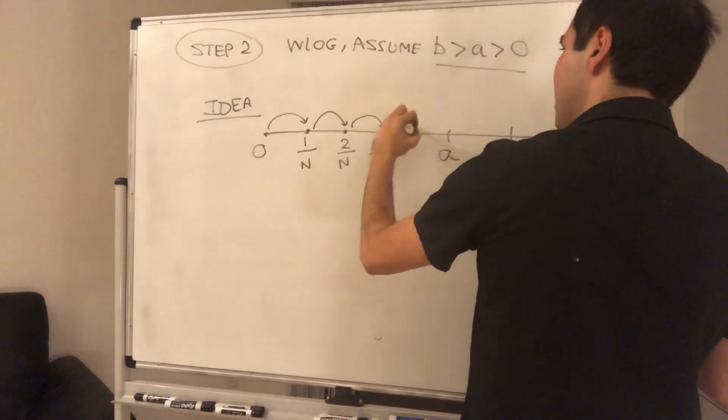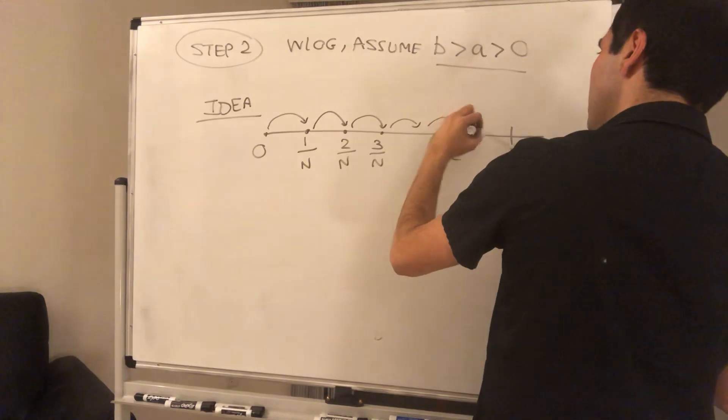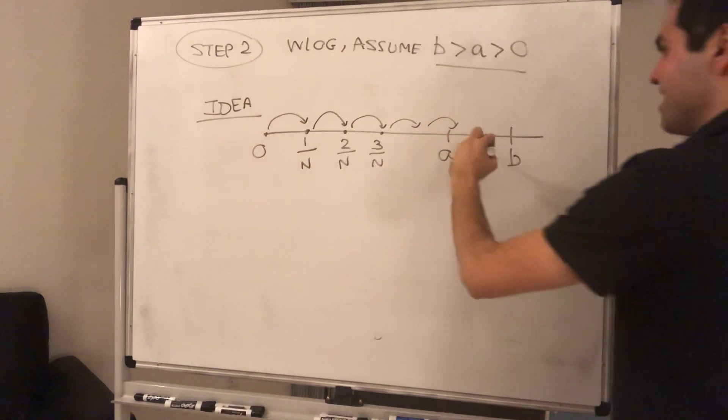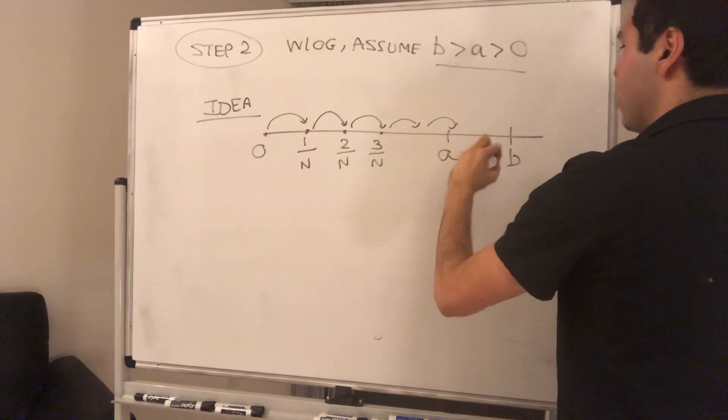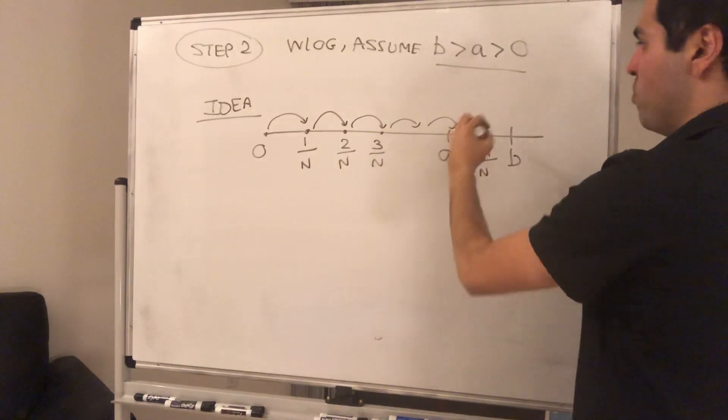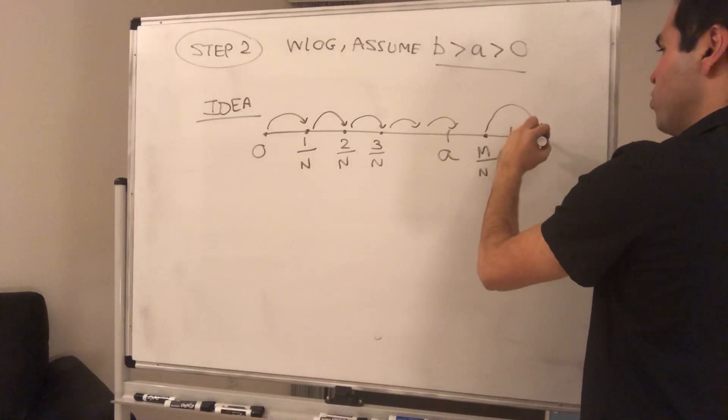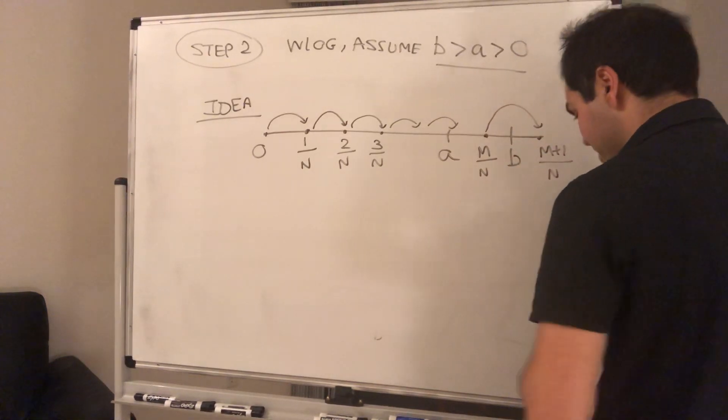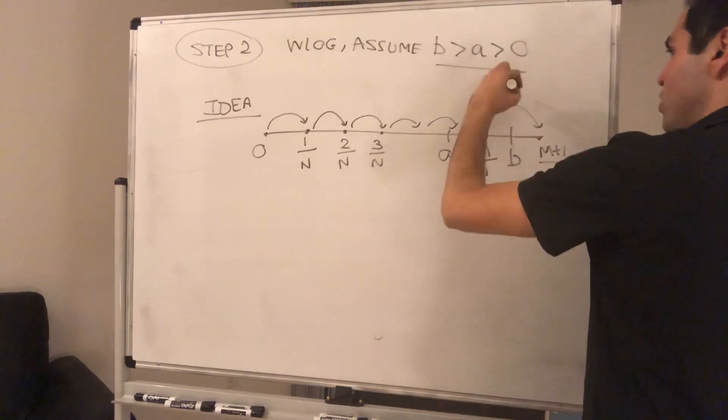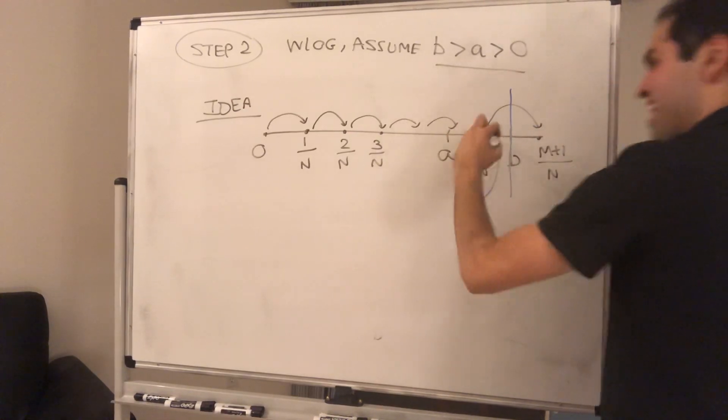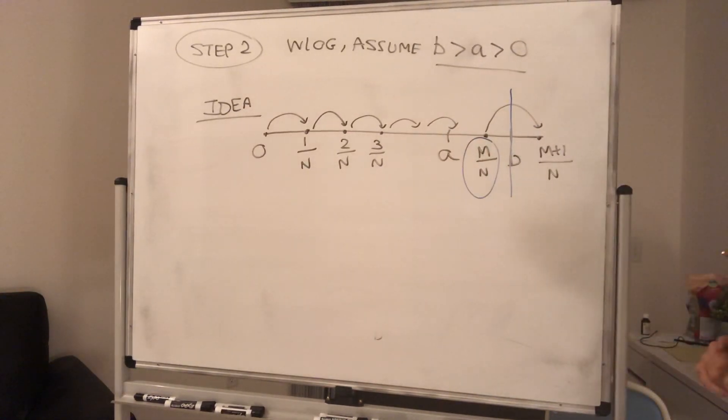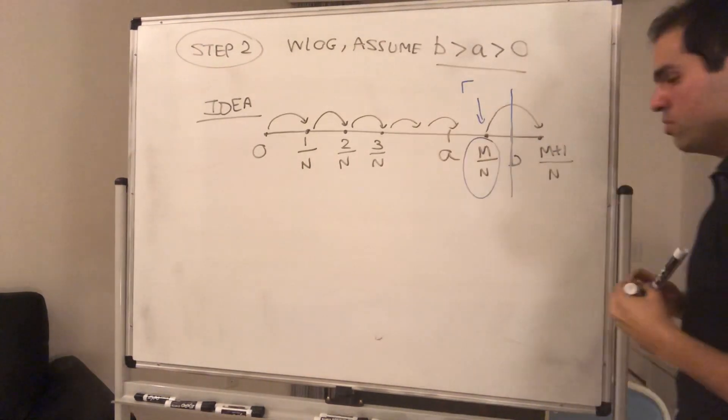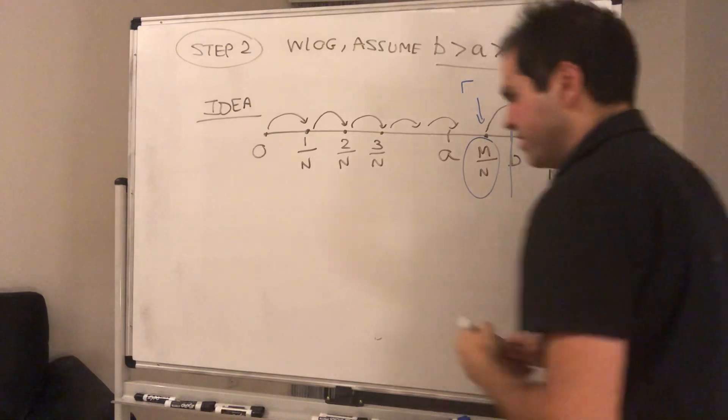And continue until you reach the last one that's less than b. Let's call this m over n. So with the property that if you add this one more time, you actually have something that's greater than b. And it turns out this last element is what solves our problem. So this is actually the r that we want.